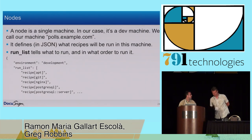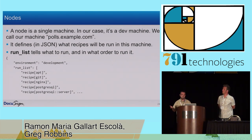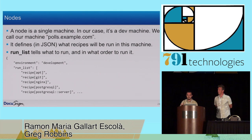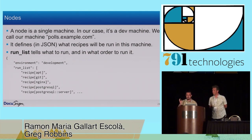After environments, you can find nodes. While an environment is a type of machine, a node is a specific, particular machine. In our case, we have a machine named polls.example.com. It's a JSON file like an environment, and it has a very important attribute named run list. The run list will list every recipe that we want our node to get installed, and not just which recipes, but in which order those recipes have to be installed — so keep that in mind because it's very important. Every recipe we want installed has to be inside this run list.